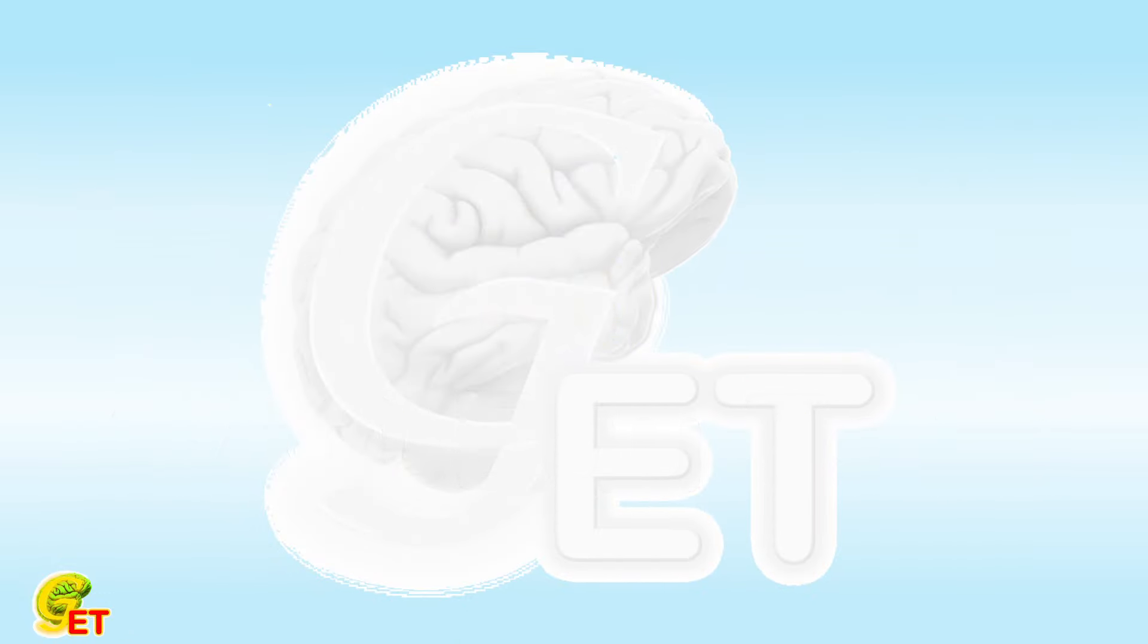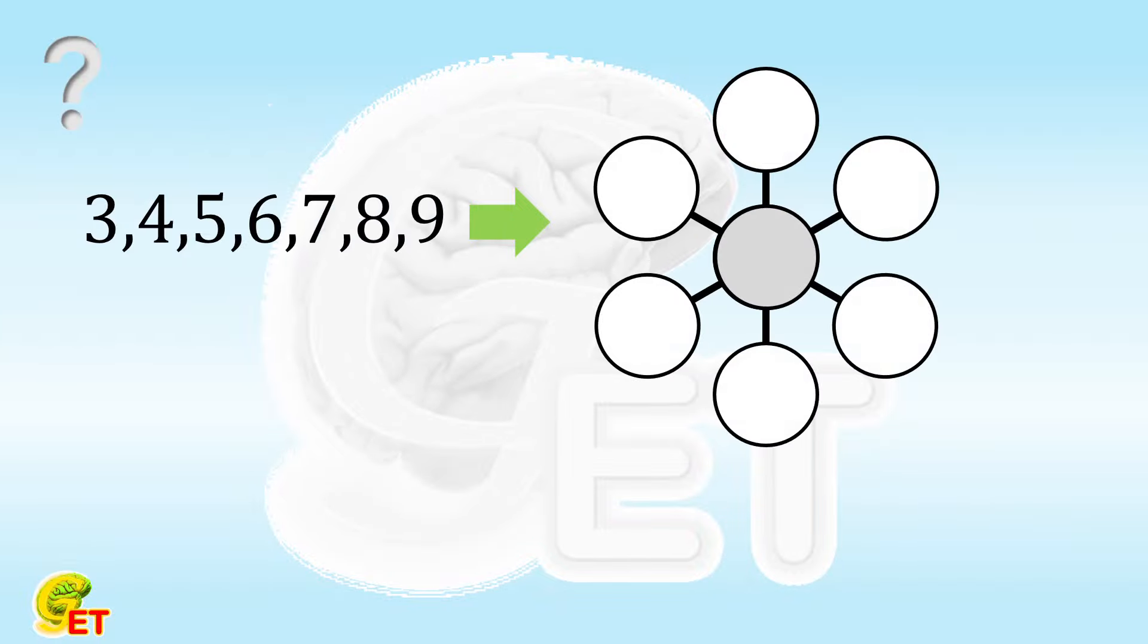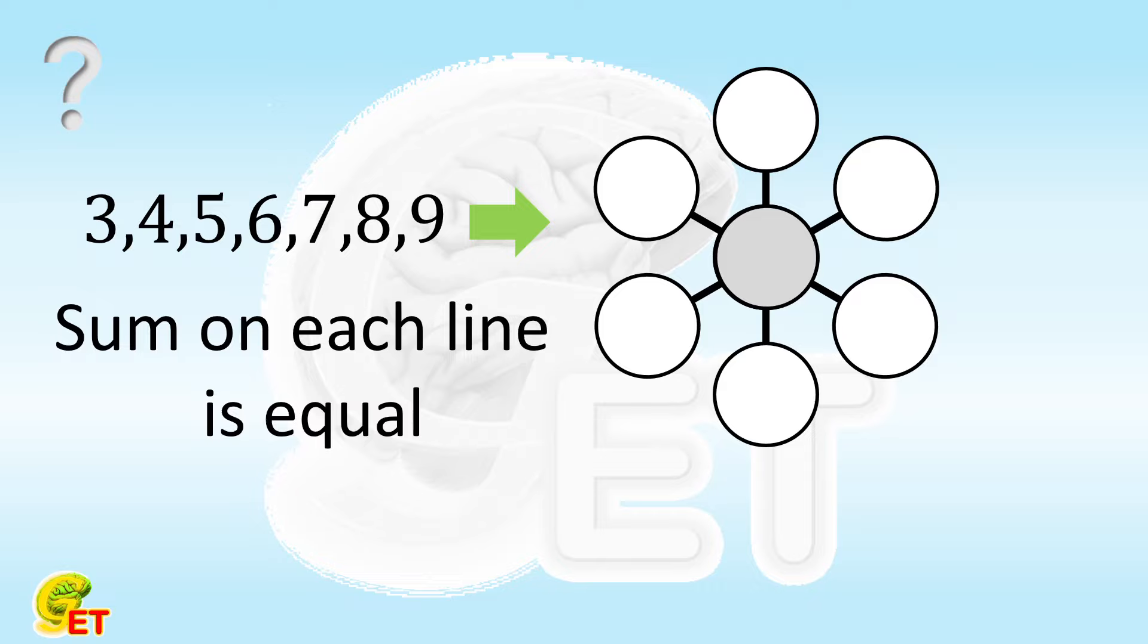Hello, my friends. Thank you very much for subscribing to our channel. We put 3, 4, 5, 6, 7, 8, and 9 into these 7 positions on the right. The summation of the 3 numbers on each line is required to be equal. How many options for the numbers are there in the middle with the question mark?